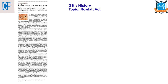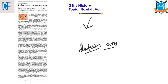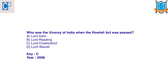The next article, 'Reflections on the Massacre,' comes under GS Paper 1 (history) as an extension of the previous article. It mentions the Rowlatt Act, which armed the British government with powers to detain any person without trial. The two leaders Satyapal and Saifuddin Kitchlew, who were fighting for independence and against implementation of this act, were arrested and deported. A 2018 UPSC prelims question asks: who was the Viceroy of India when the Rowlatt Act was passed? The answer is Lord Chelmsford.